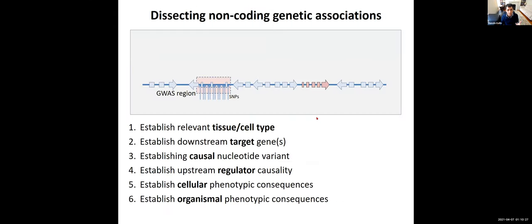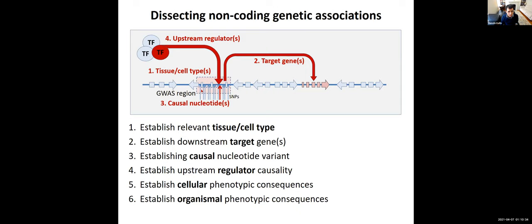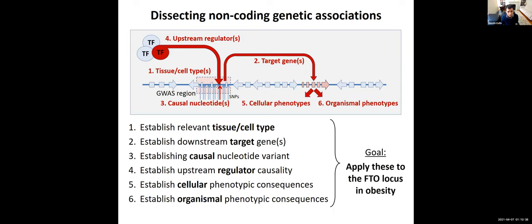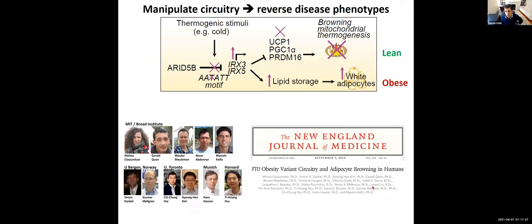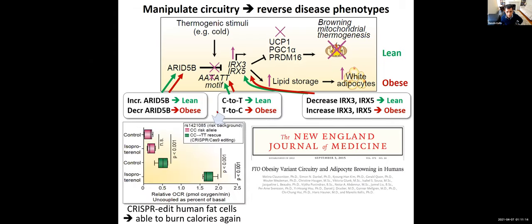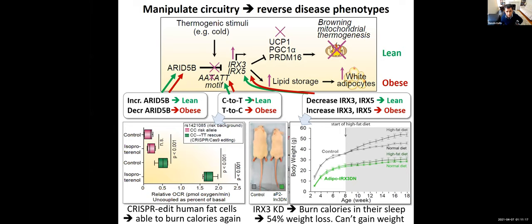We saw an example of mechanistic dissection of a non-coding association: establishing the tissue and cell type of action based on epigenomic enrichments, predicting target genes using eQTLs, inferring causal nucleotides using Bayesian fine mapping, and inferring upstream regulators using regulatory motif enrichments. We applied all of these to the FTO locus — the strongest genetic association with obesity — to infer the circuitry and ultimately manipulate it to reverse disease phenotypes.